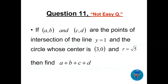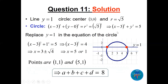Question 11: a line y=1 intersects a circle with center (3,0) and radius √5. Find a+b+c+d where (a,b) and (c,d) are the intersection points. The circle equation is (x-3)²+y²=5. Substituting y=1: (x-3)²=4, so x=1 or x=5. The intersection points are (1,1) and (5,1). Therefore a+b+c+d = 1+1+5+1 = 8.